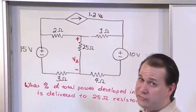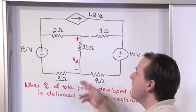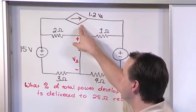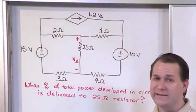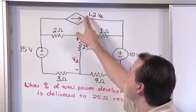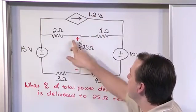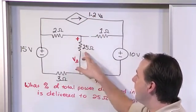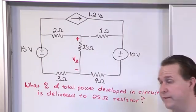instead of a voltage source that's dependent on something else, this is a dependent current source. So this is different than what we've done before. It's not a voltage source, it's a current source. The value of the current coming out of here is 1.2 times V delta. V delta is defined as the voltage in this direction across the 25 ohm resistor.